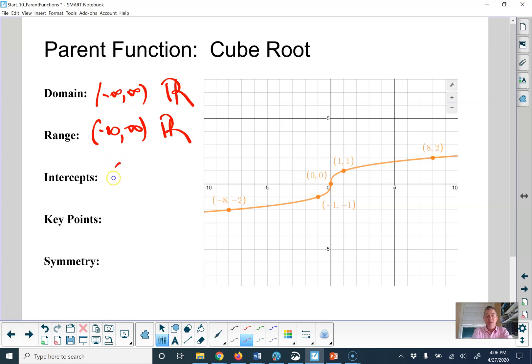The intercepts: 0, 0 is the only intercept. Key points include the same key ones that we had. x, y. The 0, 0, 1, 1 that you're all used to, but also neg 8, neg 2, and positive 8, positive 2.